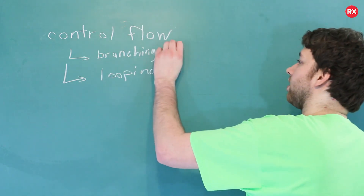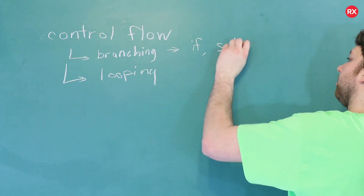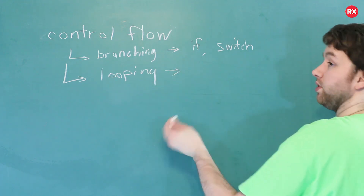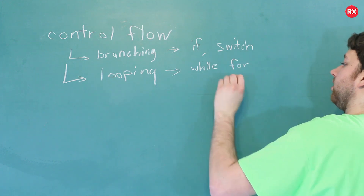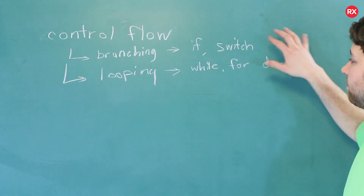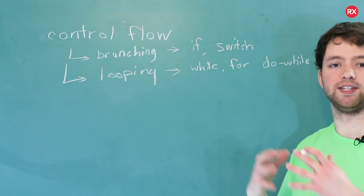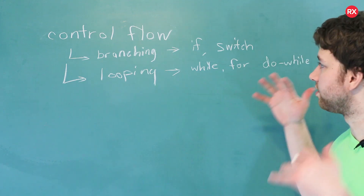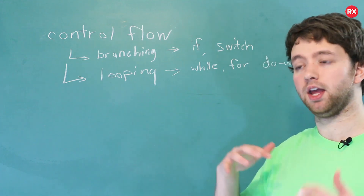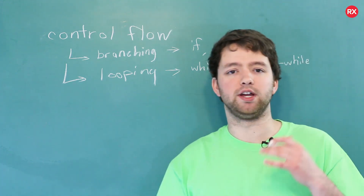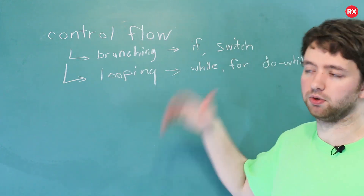When it comes to branching, the main things you need to know about are if statements and switch statements, and we're going to be talking about both of these. When it comes to looping, the ones you should know about are while loops, for loops, and do-while loops. So we're going to talk about two main branching techniques and three looping techniques, then apply those to an application. We're going to start with branching — so this video is going to be about if statements and switch statements.